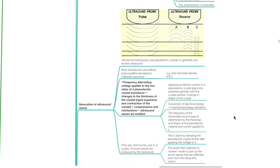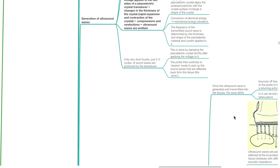When high-frequency alternating voltage is applied to the two sides of a piezoelectric crystal transducer, this results in changes in the thickness of the crystal and causes rapid expansion and contraction, producing compressions and rarefactions so that ultrasound waves are emitted. Applying an electric current aligns the polarized particles with the crystal surface, changing the crystal's shape — converting electrical energy to mechanical energy as vibrations. The frequency of the transmitted sound wave is determined by the thickness and shape of the piezoelectric material and the current applied. Only very short bursts of two to three cycles are produced, achieved by damping the crystal shortly after applying voltage. The probe then switches to receive mode to pick up reflected sound waves.